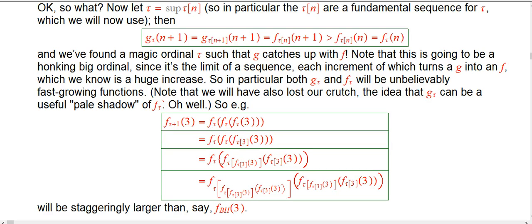f sub tau plus one of three. You just iterate f tau three times, so you get f tau of three. We're going to find that the third ordinal in this tau sequence is already bigger than BH, quite a bit bigger than BH, something that needs multiple stages of ordinal collapsing functions to recreate. You're going to evaluate that at three.